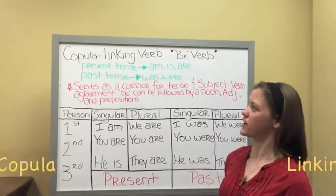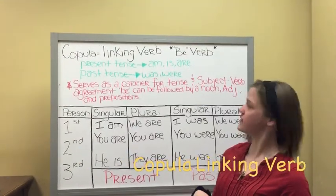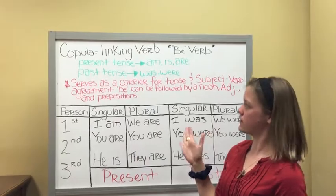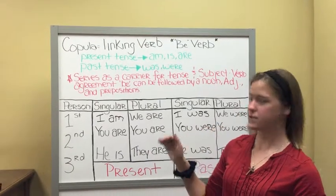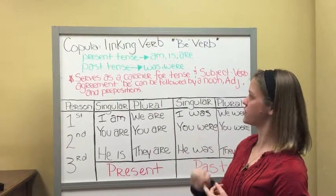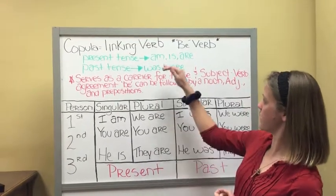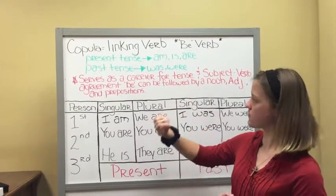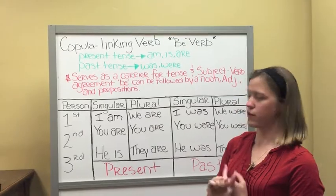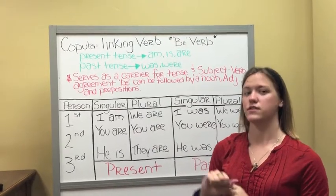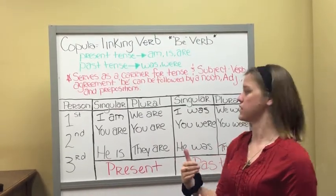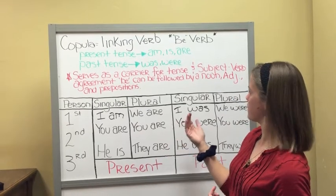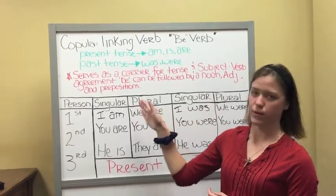For subject agreement, we're covering copulas — the linking verb, specifically the be verb. They come in two different forms: present tense and past tense. Present tense is am, is, are, and past tense is was, were. Copulas mainly serve as a carrier for tense and subject agreement, and because they carry subject agreement, we're using them here. The be verb can be followed by a noun, adjective, or preposition.